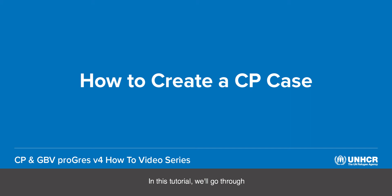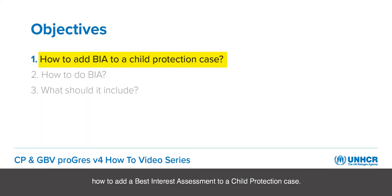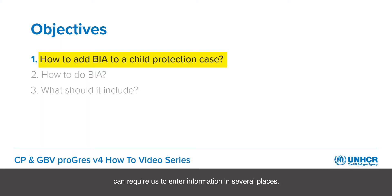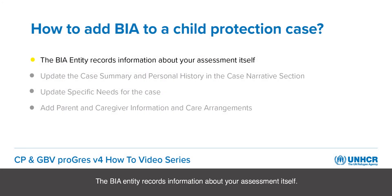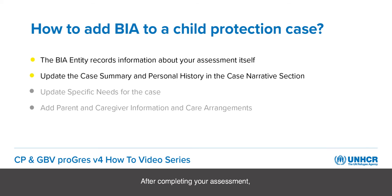In this tutorial, we will go through how to add a best interest assessment to a child protection case. The assessment step of case management for children at risk can require us to enter information in several places. The BIA entity records information about your assessment itself. After completing your assessment, you should also update the case summary and personal history in the case narrative section.